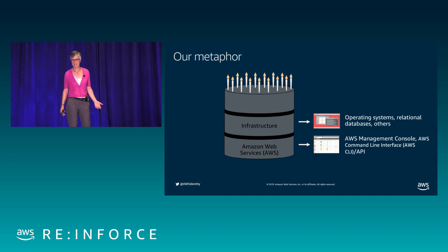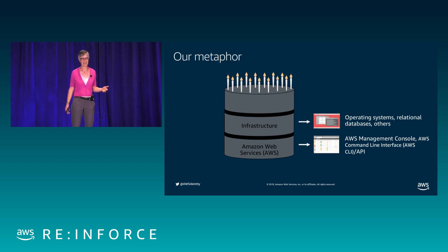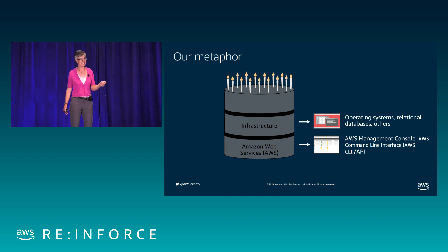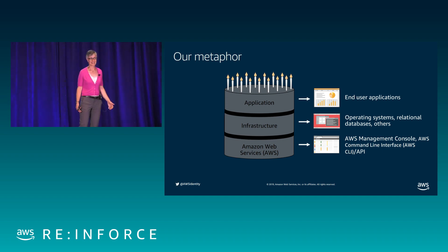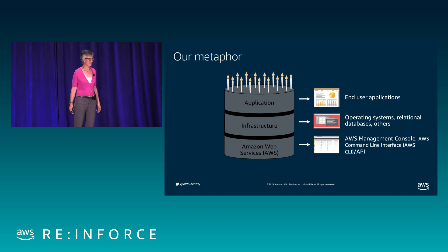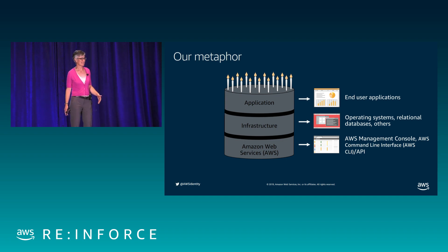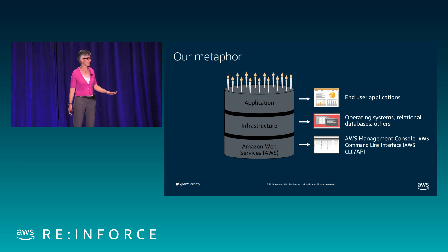The middle layer is the infrastructure layer. This layer is unique because not only are there humans trying to access it — the operators who are tuning, deploying, and monitoring your infrastructure — but there are also the identities of that infrastructure itself, the instances and the databases. You can think of it as identities for the infrastructure and identities of the infrastructure. At the top level, you have your applications, which are the only layer that any of your end users interact with.